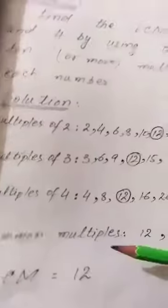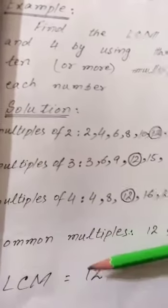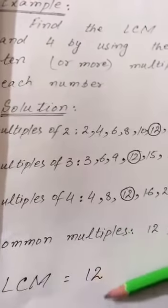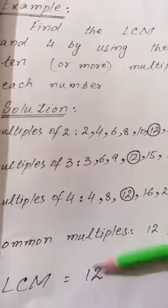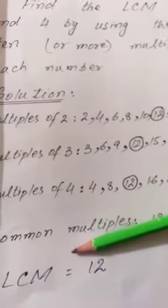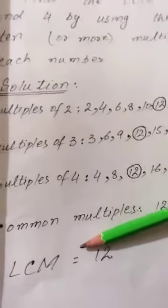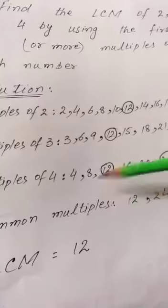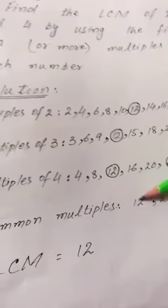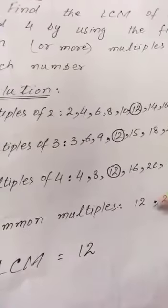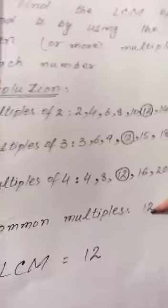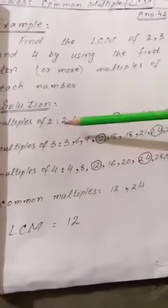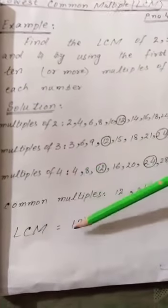Now for finding the LCM, we will write 12 as LCM - Lowest Common Multiple. So the LCM of 2, 3, and 4 is 12.